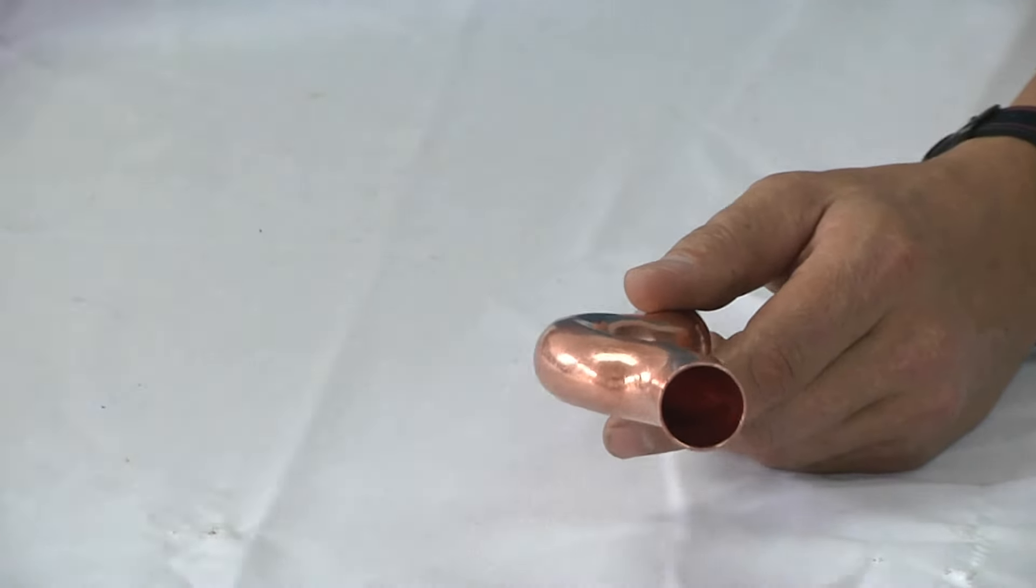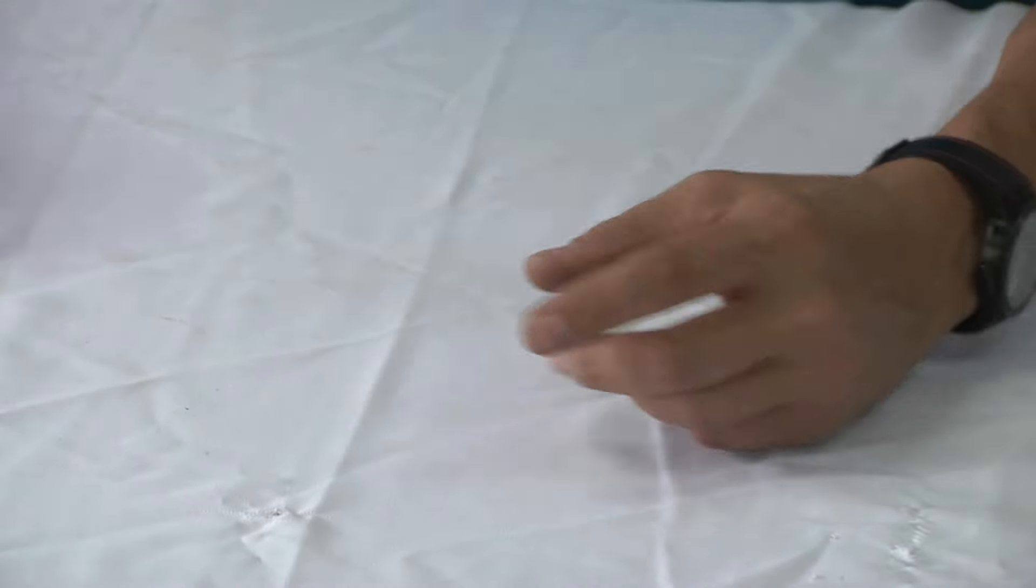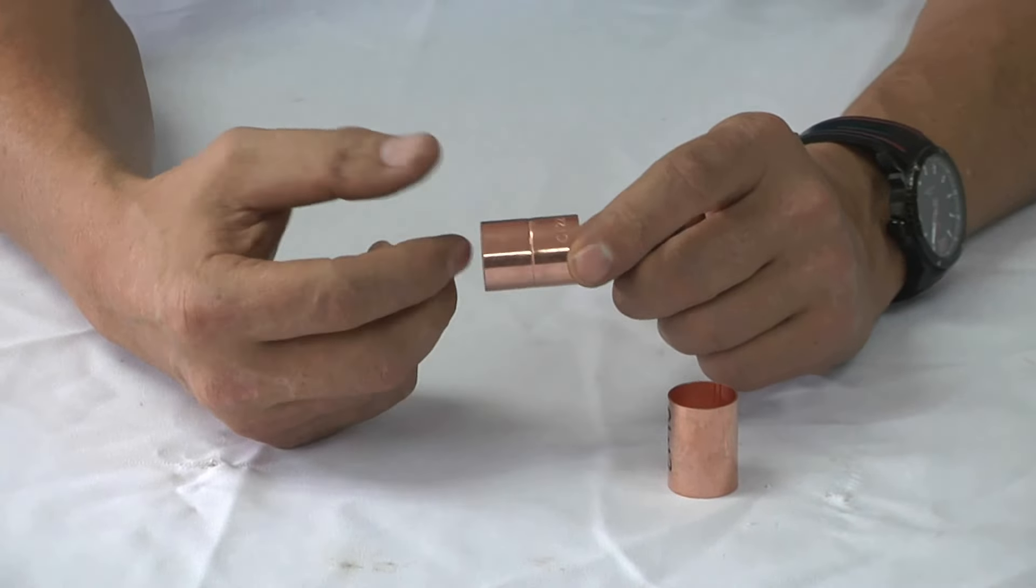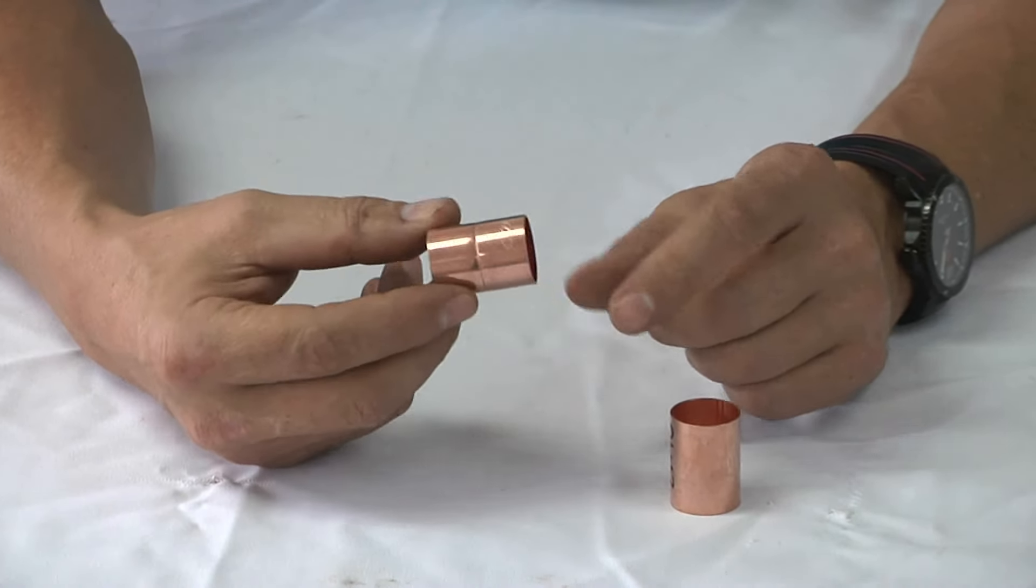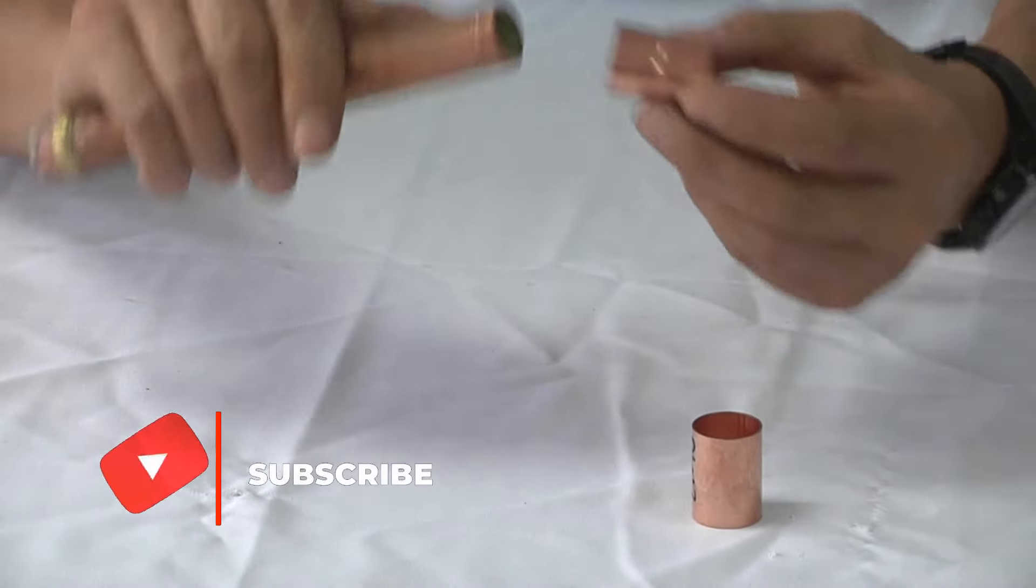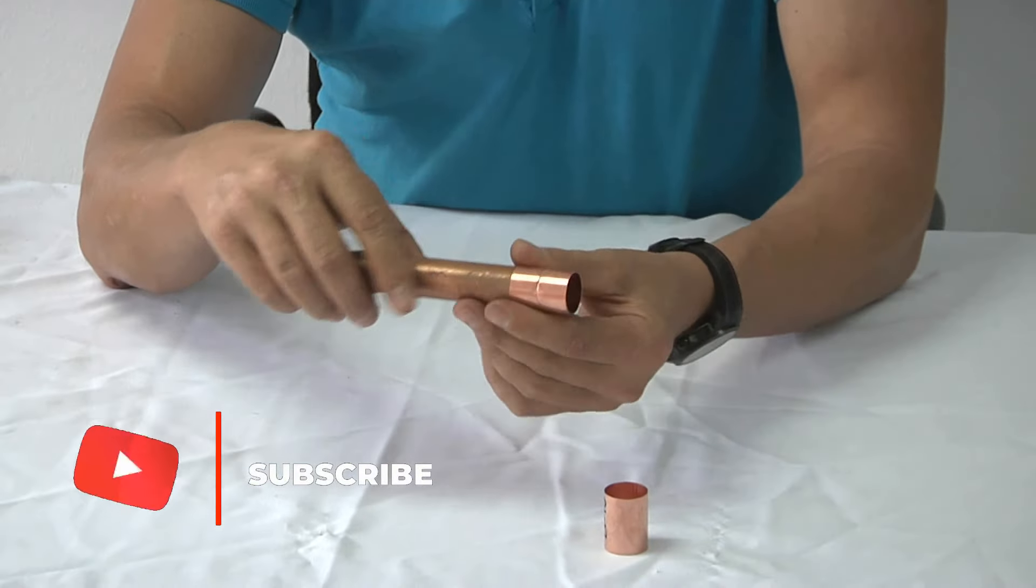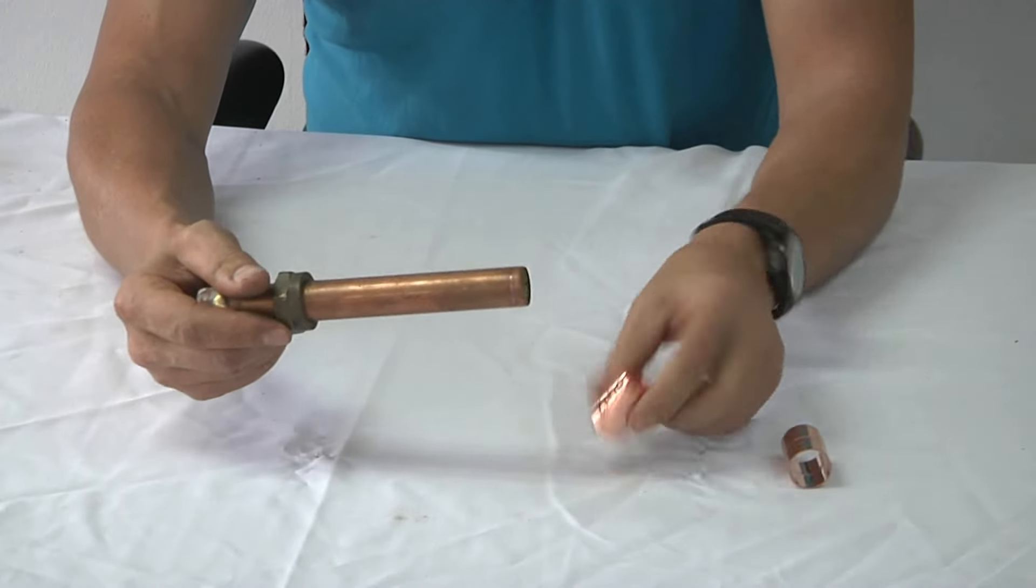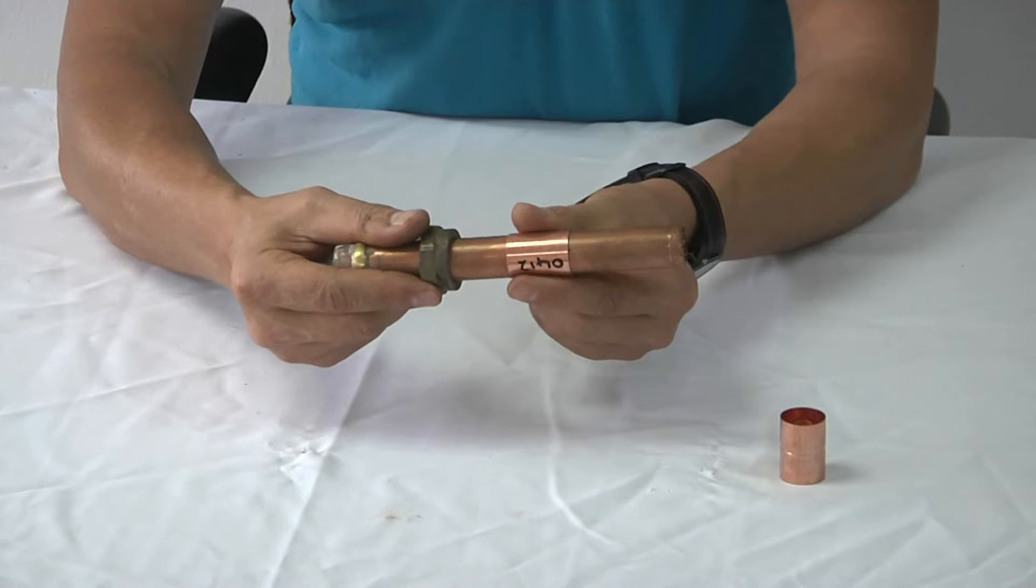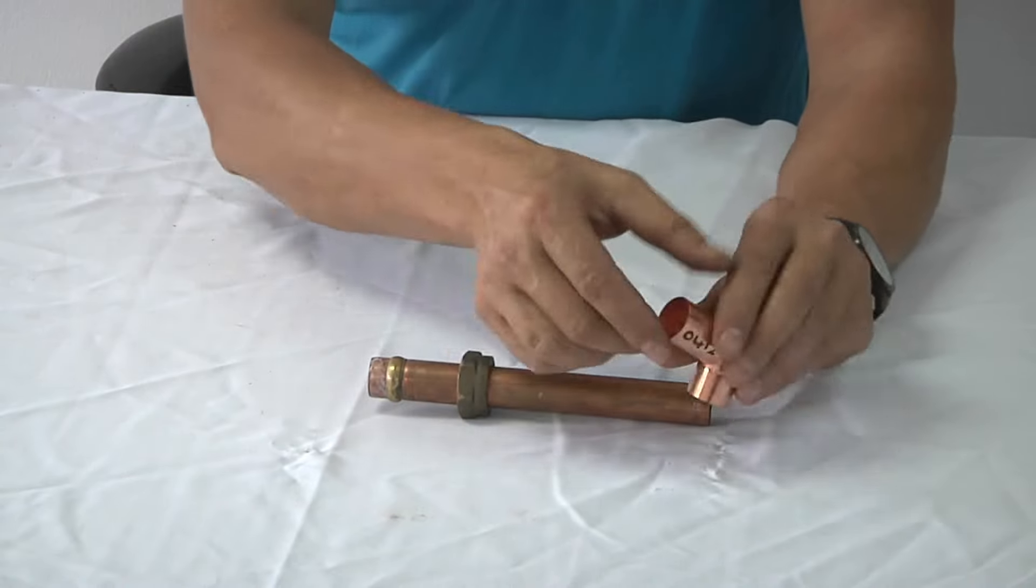Okay next we have two 22 millimeter sockets. This is now to join a copper pipe together with another copper pipe. The difference is this socket goes in one side and cannot slip over. This is called a straight socket and this is called a slip socket. That can slip over the pipe to join two copper pipes when it's in the wall. Again this is 22 millimeter.